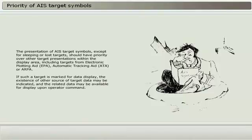The presentation of AIS target symbols, except for sleeping or lost targets, should have priority over other target presentations within the display area, including targets from electronic plotting aid (EPA), automatic tracking aid (ATA), or ARPA. If such a target is marked for data display, the existence of some other source of target data may be indicated, and the related data may be available for display upon operator command.